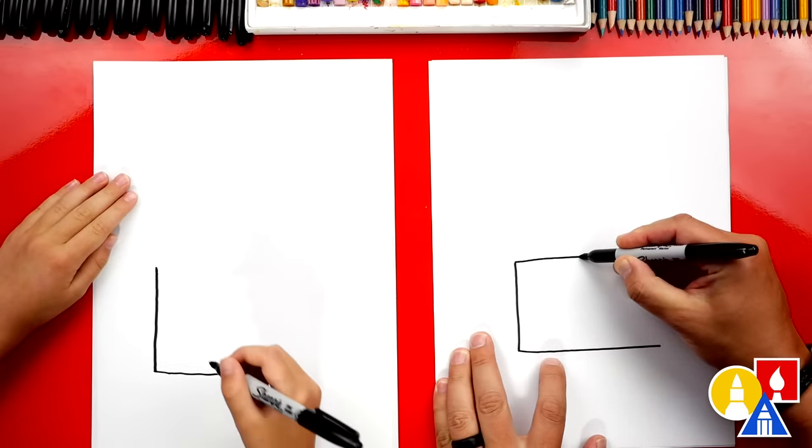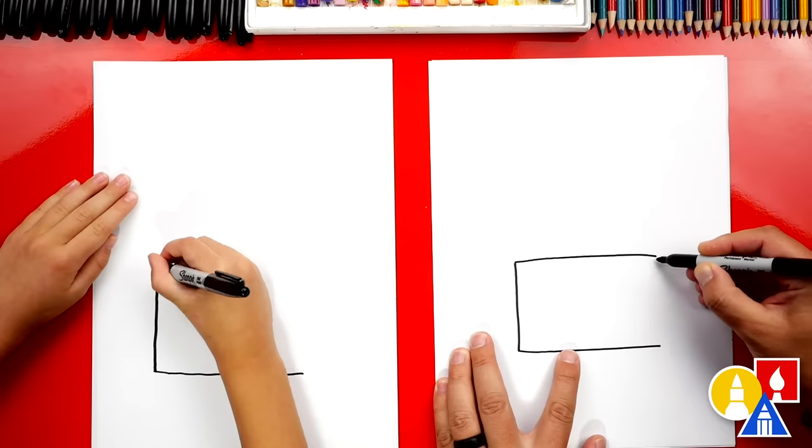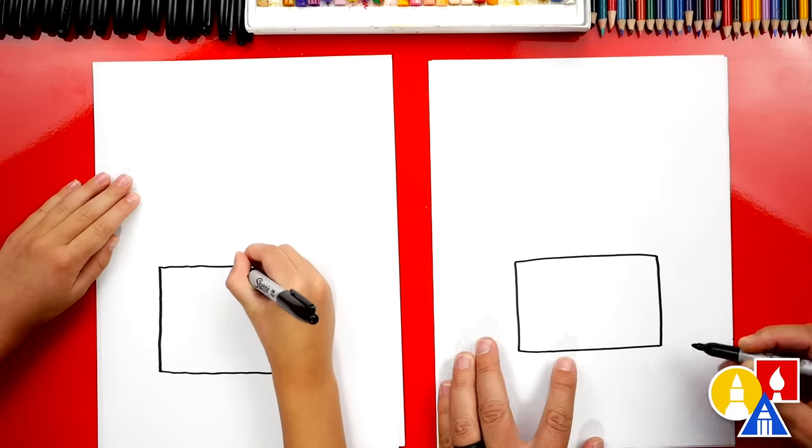So let's finish our rectangle. We're going to draw another long line across and then a short line down to match.